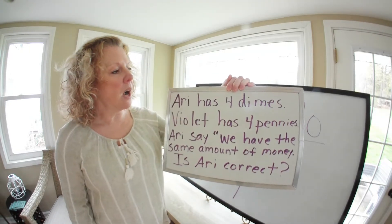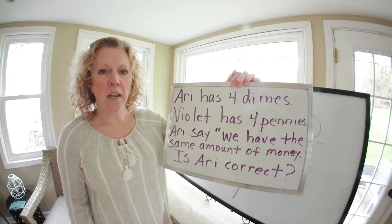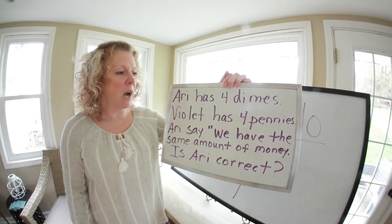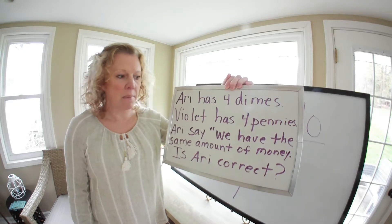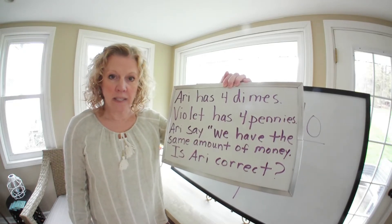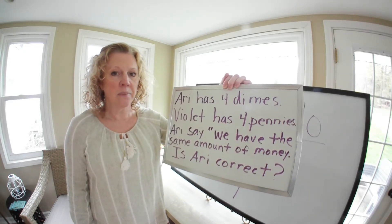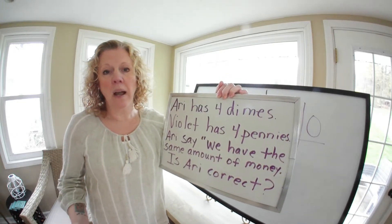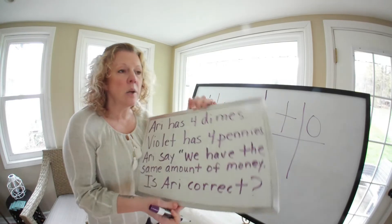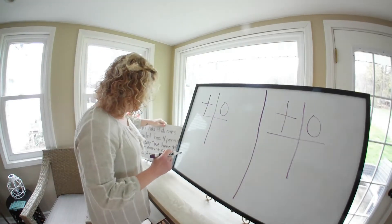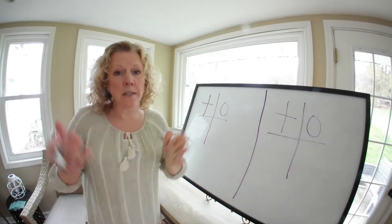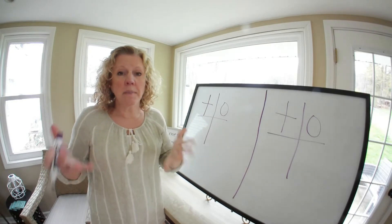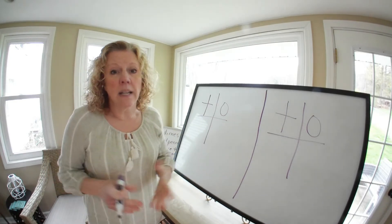Here's our word problem. Ari has four dimes. Violet has four pennies. Ari says we have the same amount of money. Is he correct? Well, let's think about it. How much is a dime worth? How much is a penny worth? What we need to think about is are they worth the same amount? Just because one has four coins and the other has four coins doesn't mean that they have the same amount.